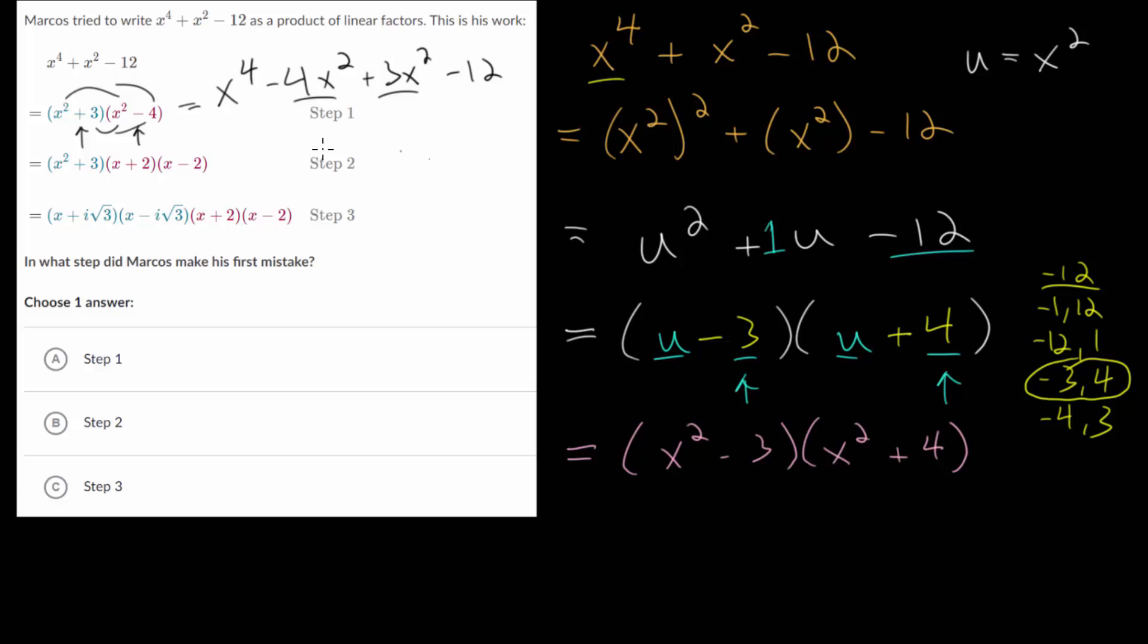So it looks like the answer to our question here, where did he make the mistake, is in step 1. Now if we wanted to, we can actually factor this further, just like he tried to do here, but he did it with this mistake in mind, so his final answer will be incorrect.